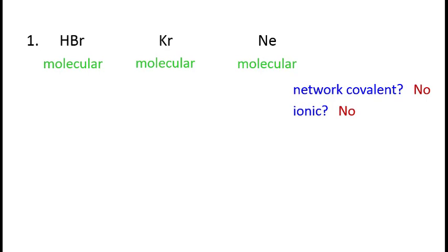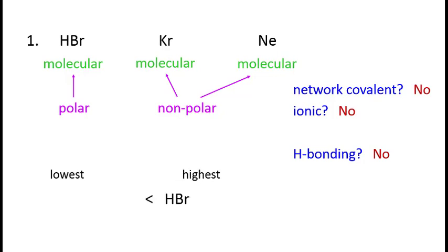So we look at the intermolecular forces. HBr is polar, whereas Krypton and Neon are nonpolar. None of them have hydrogen bonding as a force. Since HBr has two forces, dipolar and dispersion, and the other two only have one force, dispersion, HBr will be the highest melting.